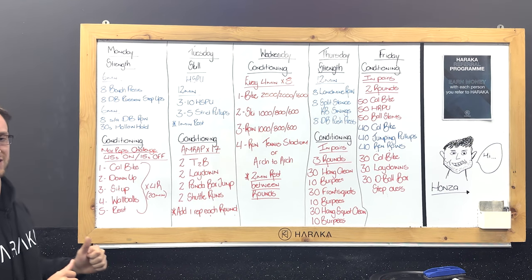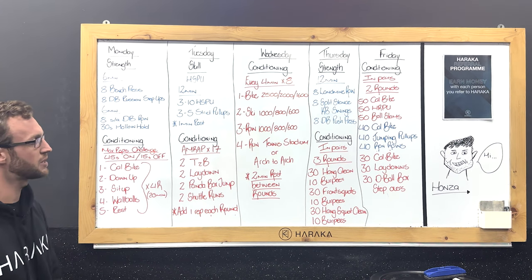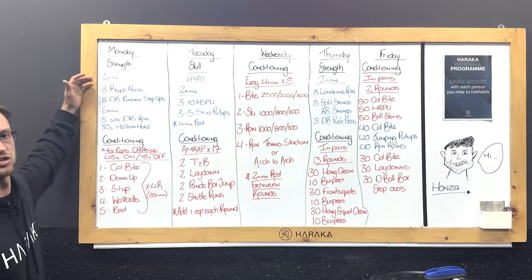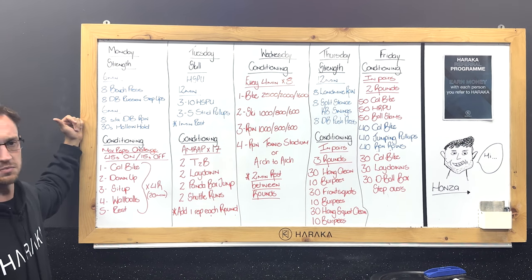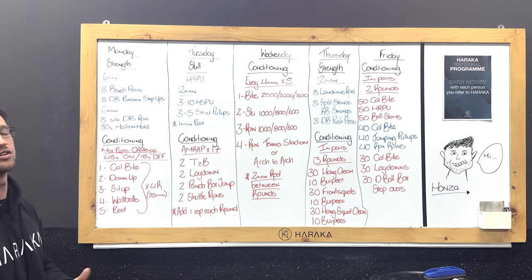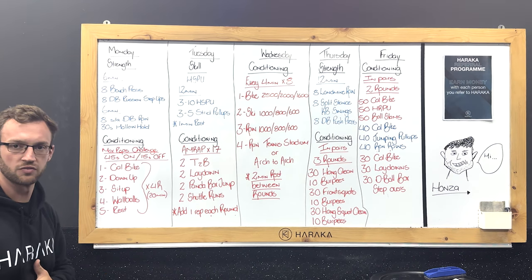For the first one it's going to be eight bench presses followed by eight Russian step-ups, dumbbell Russian step-ups. You're going to have six minutes where we're just going to do as many sets as we can there. Then in your second six minute window we have eight single arm dumbbell rows and then a 30 second hollow hold to work a little bit on that core.